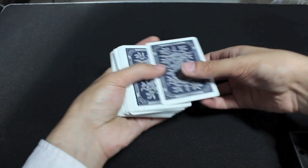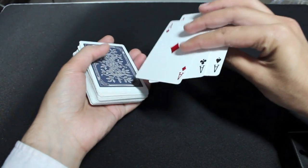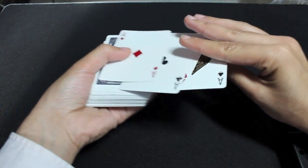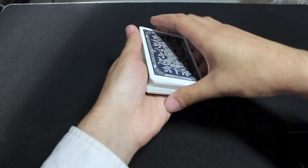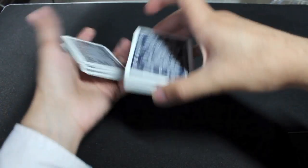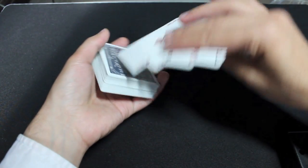So your setup is the four aces on top of the deck. And you can start off with any series of false shuffles or false cuts that you want to do, but in the end you want to have the four aces on top.